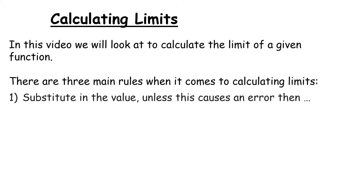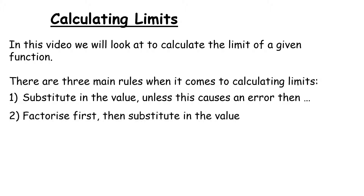The first rule is to do a basic substitution. As we're told that x tends towards a certain value, we substitute in that value, unless this causes an error. In that case, we want to factorise first and then substitute in the value. At higher level we're more likely to see the second or third rule.